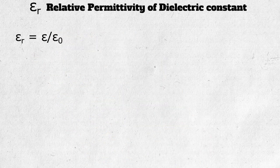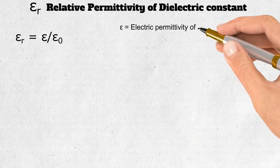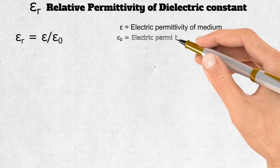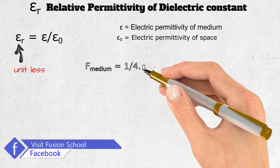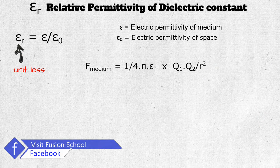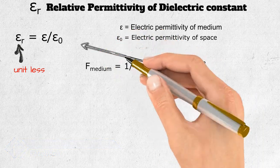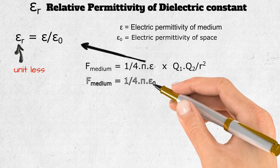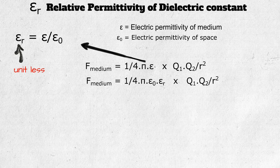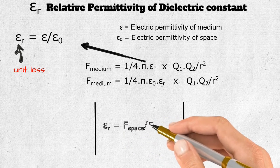Relative permittivity or dielectric constant is represented by εᵣ. εᵣ equals ε / ε₀, where ε is electric permittivity of the medium and ε₀ is that of free space. εᵣ is unitless. The force between two charges q1 and q2 in any medium equals 1 / (4π·ε₀·εᵣ) × q1·q2 / r². A key point to remember: εᵣ equals force in vacuum divided by force in medium.